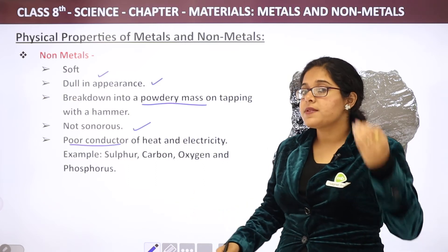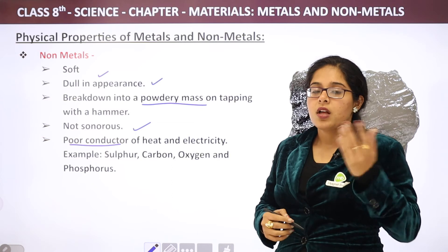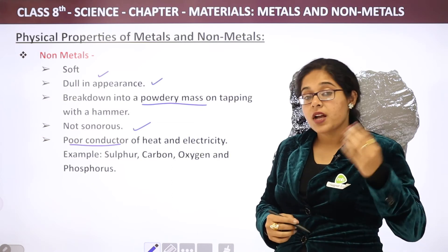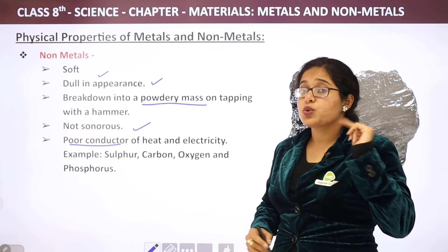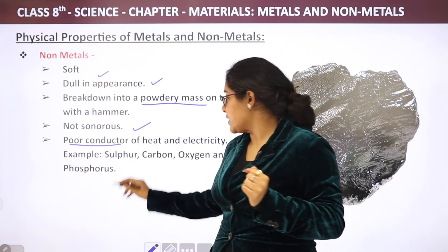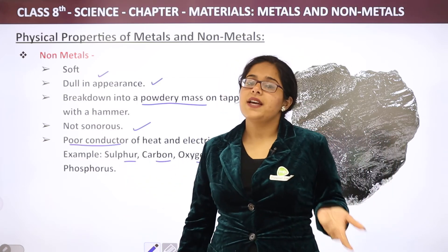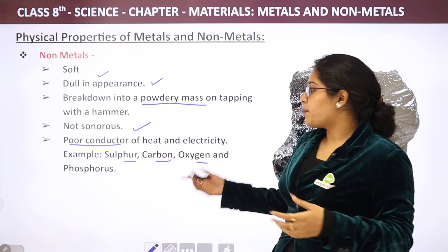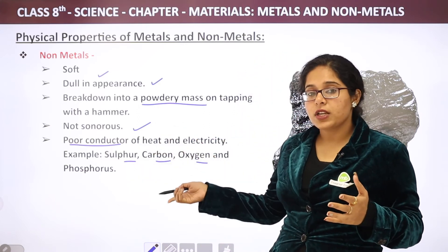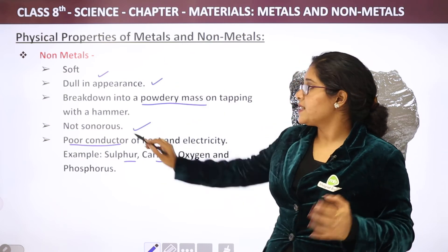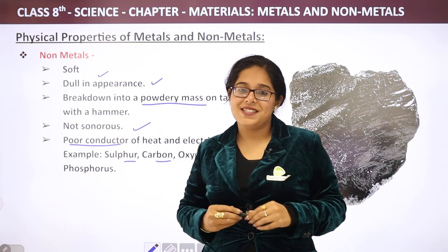Metals were good conductors of heat and electricity, but non-metals are poor conductors of heat and electricity. Some examples of non-metals: carbon, sulfur, oxygen, phosphorus, etc. We can identify non-metals from some physical properties and some chemical properties, which we will talk about in our next video.